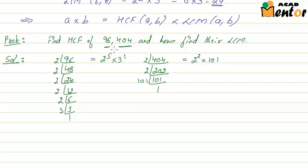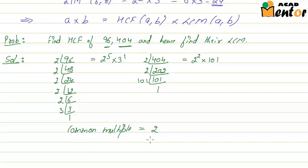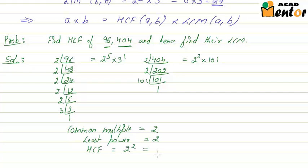In order to find the HCF of 96 and 404, we take the least power of common factors. The common factor between the two is only 2. Six has 2 to the power 5 and 404 has 2 to the power 2, so the least power is 2. Therefore, the HCF of 96 and 404 is 2 to the power 2, which is 4.